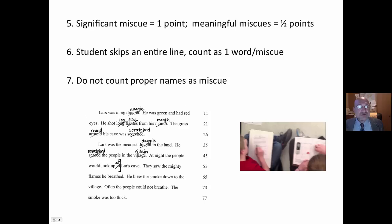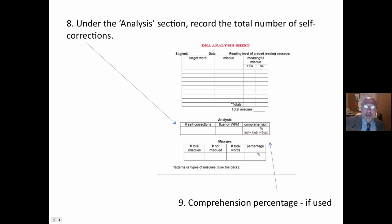Now, at the end, I score that if it was a significant miscue, I deduct one point. If it was a meaningful miscue, only a half a point. If a student skips an entire line, I count that as one word and one miscue. I don't count the individual words. And I do not count proper names as miscues when that is a miscue.